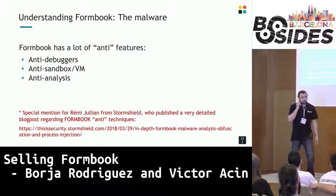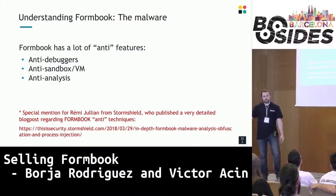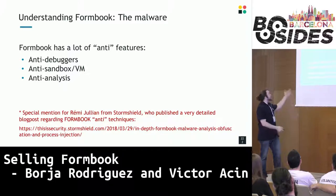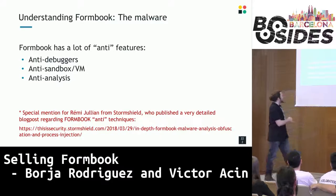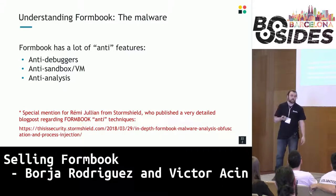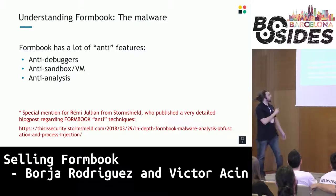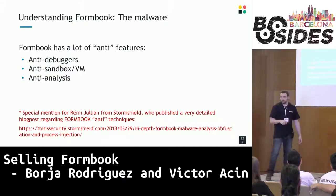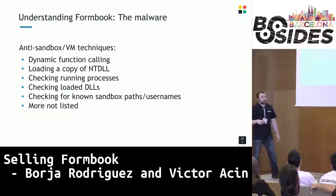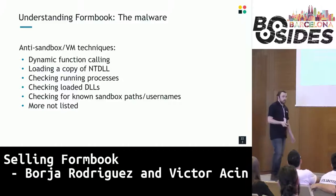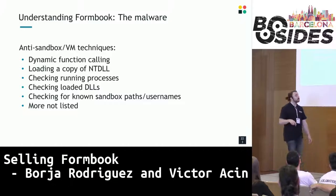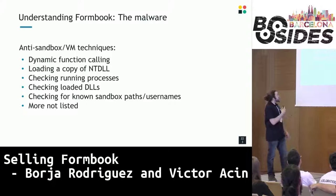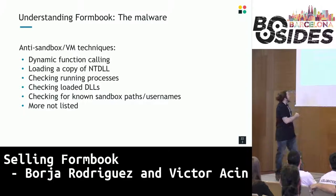Formbook has a ton of anti-features — all those features designed to hinder researcher analysis of the sample. These include anti-debugger, anti-sandbox, anti-VM, and anti-analysis mechanisms. I want to give special thanks to Gemi Julian from StormShield, who published a very detailed blog post related to these anti-measures. For anti-sandbox and anti-VM techniques, it uses dynamic function calling, loads its own copy of NTDLL to erase any hooks, and checks for running processes known to be used by researchers, loaded DLLs, sandbox paths, and usernames.